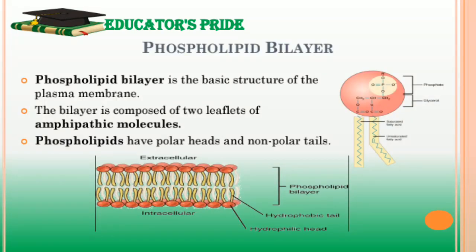The basic structure of the plasma membrane is the phospholipid bilayer, composed of two leaflets of phospholipids. Phospholipids are amphipathic molecules whose polar heads are in contact with the intra- or extracellular aqueous face, whereas the non-polar tails face each other forming the hydrophobic interior. The hydrophobic effect and van der Waals interactions between the fatty acyl tails are the major forces that organize the lipid bilayer.